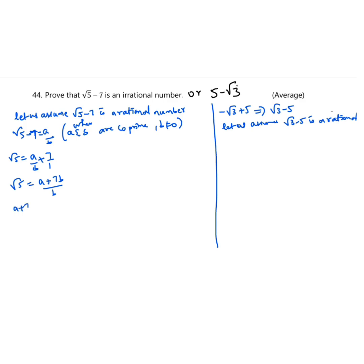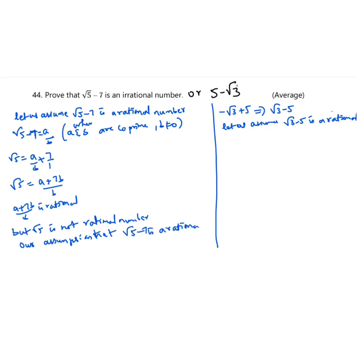Now (a + 7b)/b is a rational number. But we know √5 is not a rational number. Therefore our assumption that √5 - 7 is a rational number is wrong. Therefore we can conclude that √5 - 7 is an irrational number.